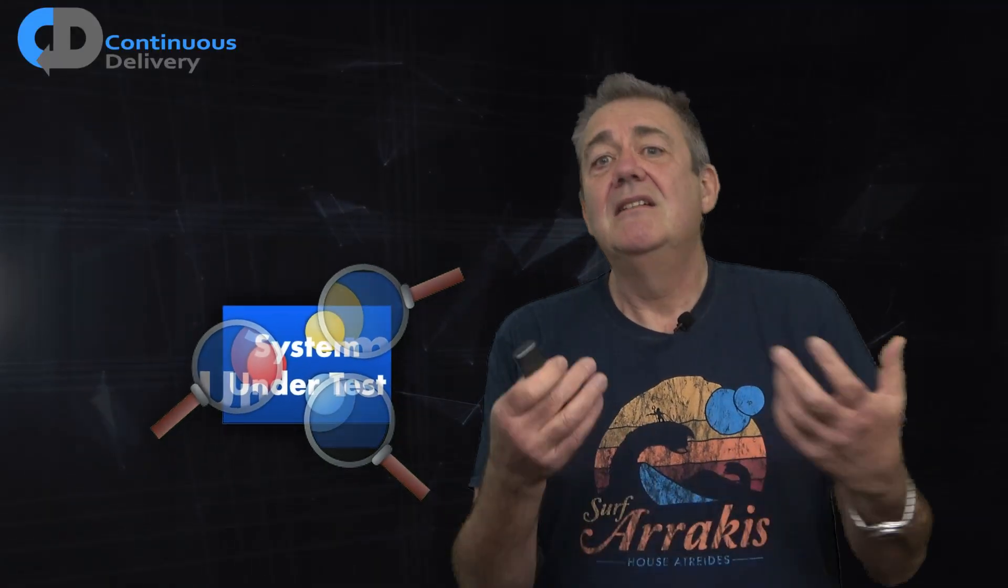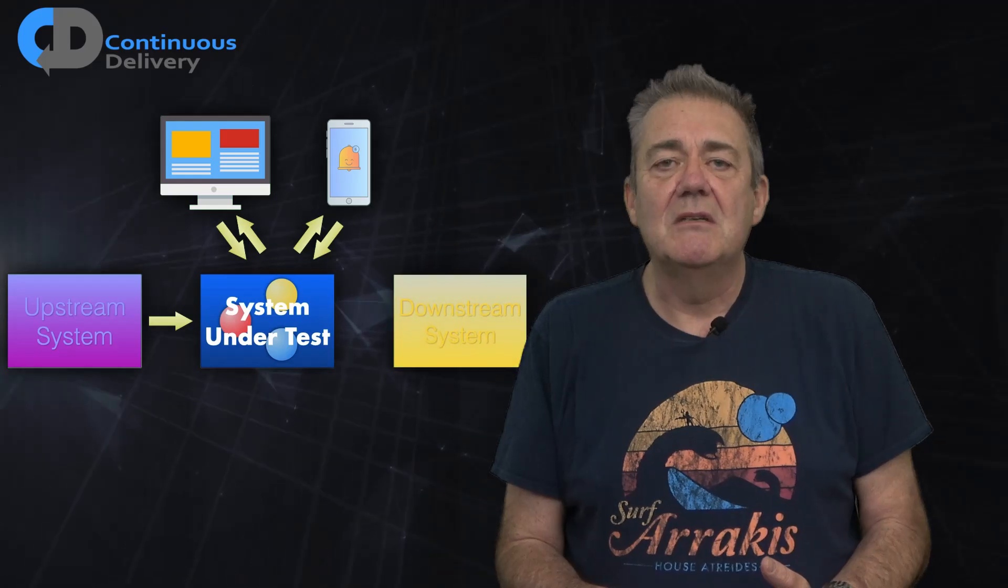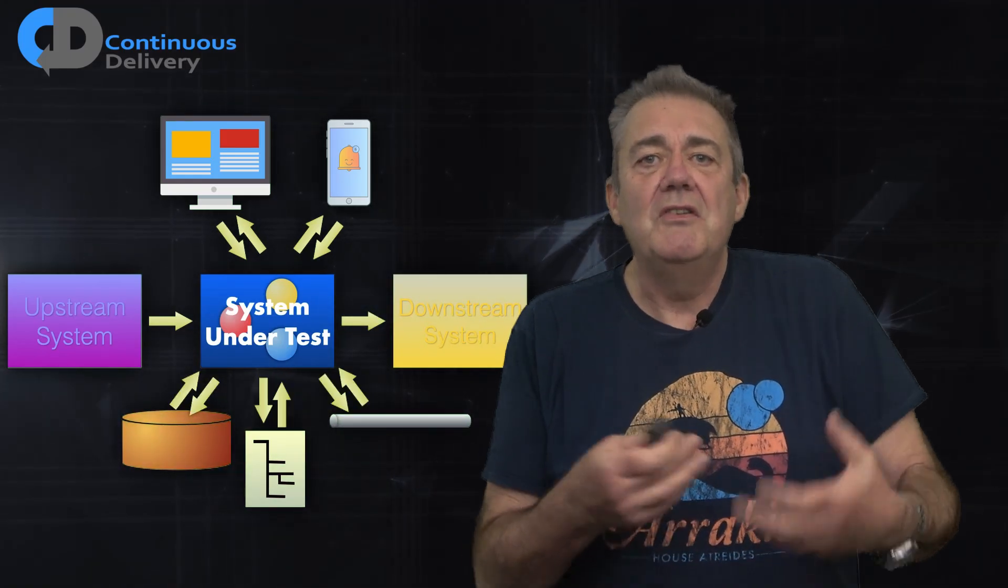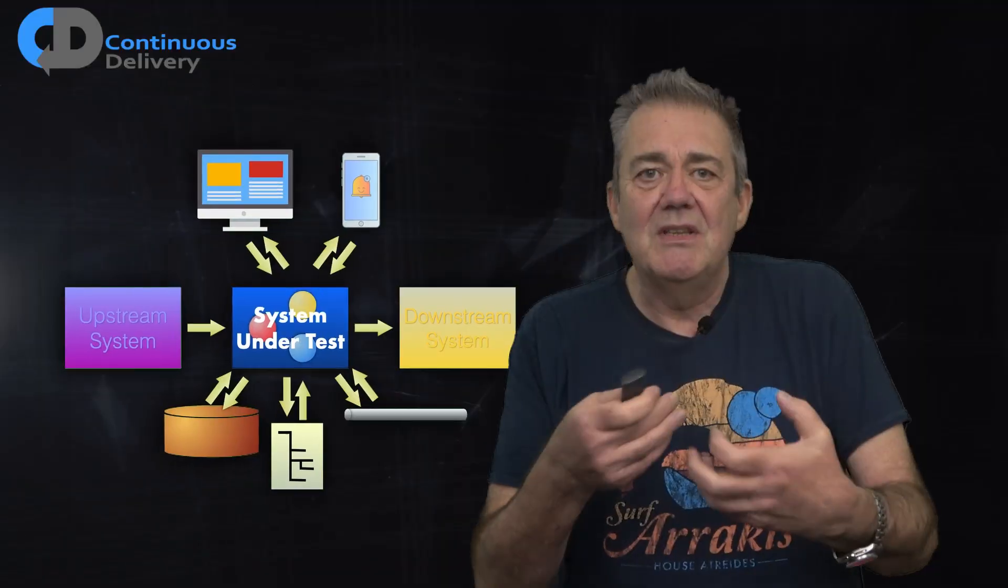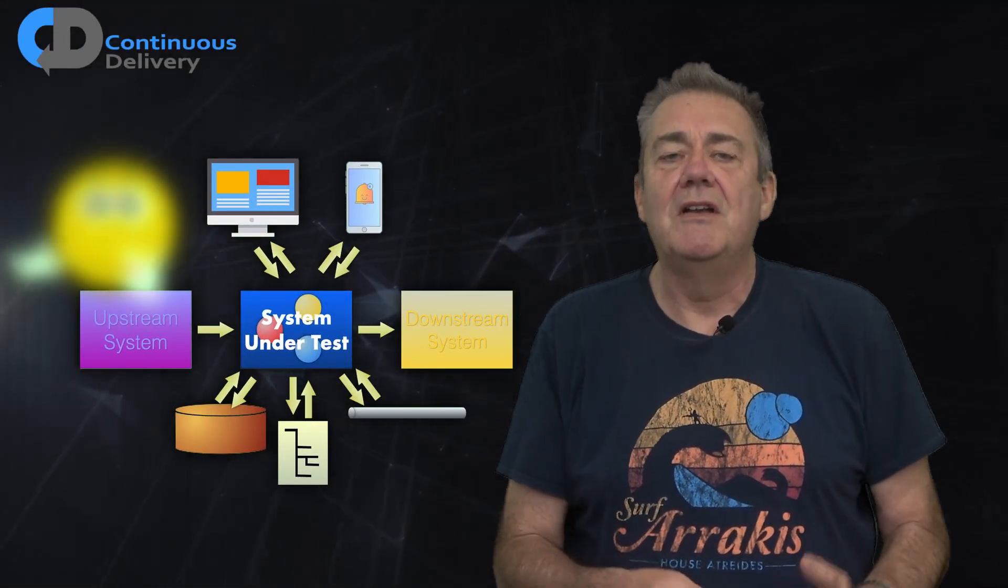But then there is everything else. UIs, upstream systems, downstream systems, data stores, messaging, file system access. Those bits of our system that interact with the outside world in some way, or at least the bits of our computer outside of our system.